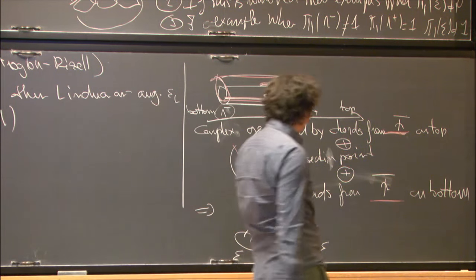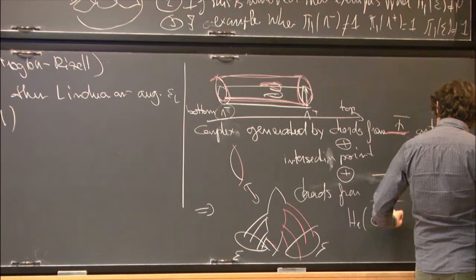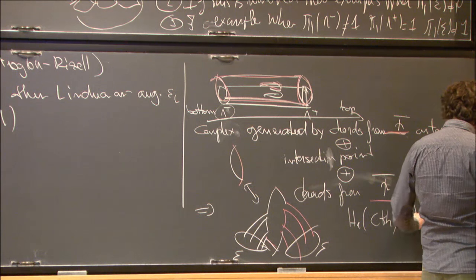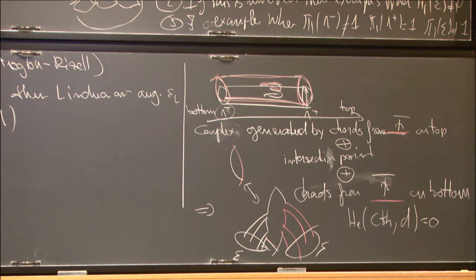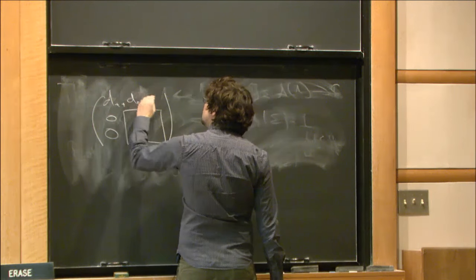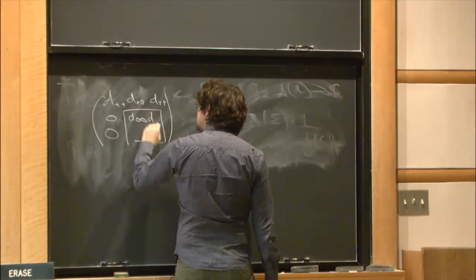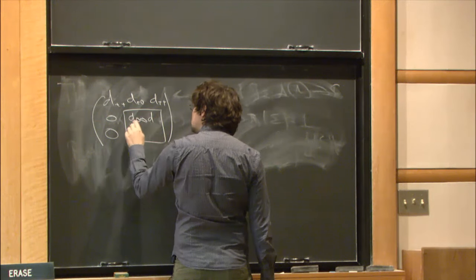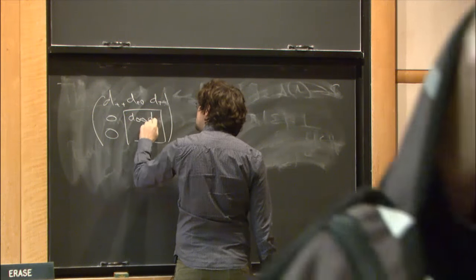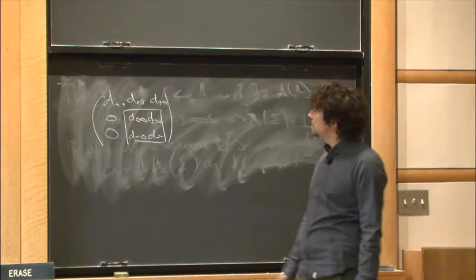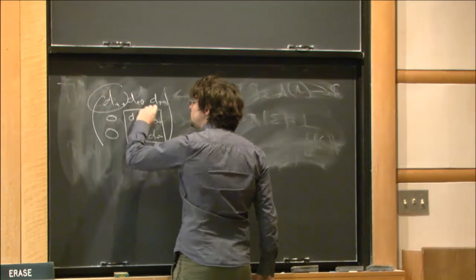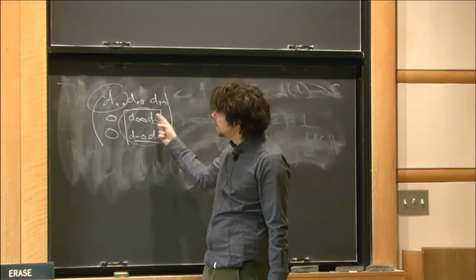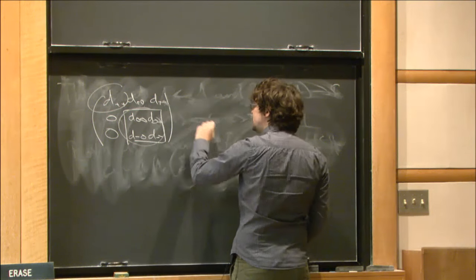This complex is acyclic. If you look at the shape it has, it is a 3×3 matrix of terms. Some terms are zero, some are nonzero, and what you actually see is the cone of a map. The two sub-complexes appear, and the fact that the total complex is acyclic means that this map is a quasi-isomorphism.